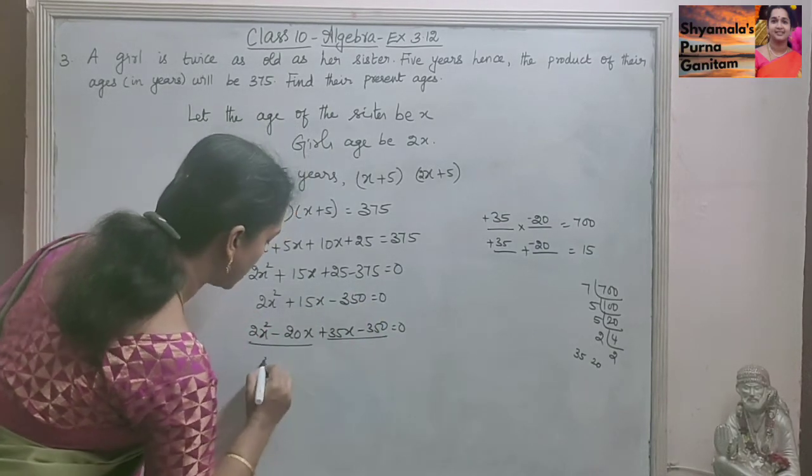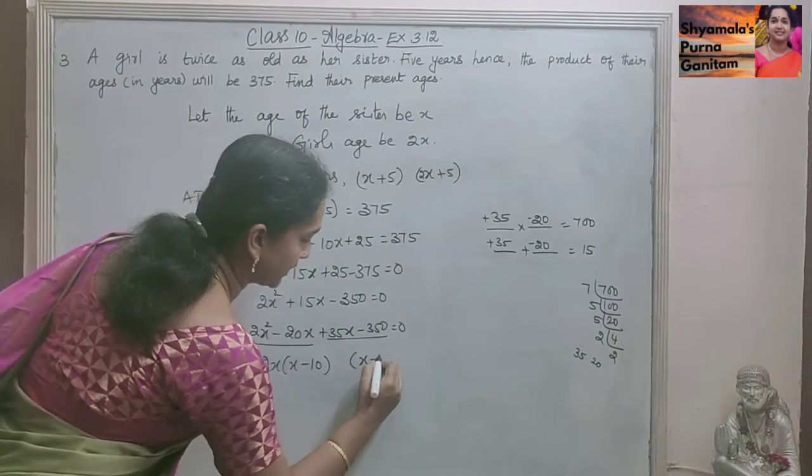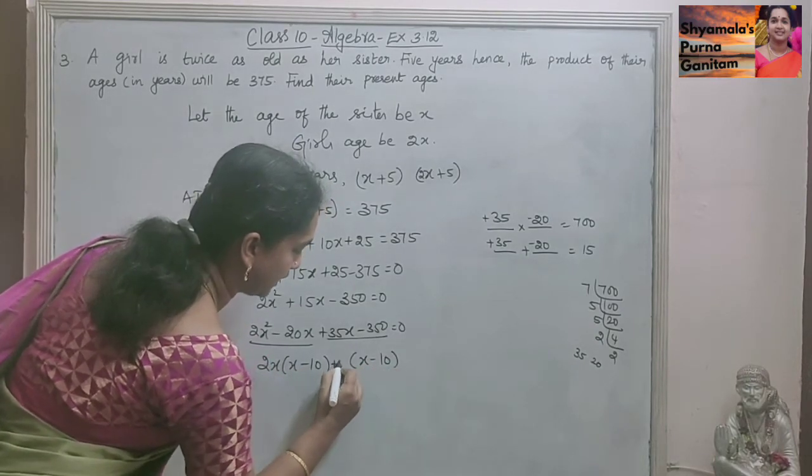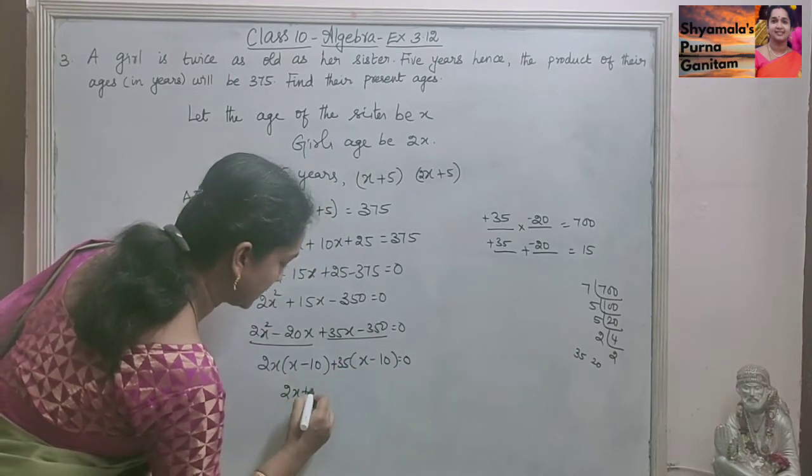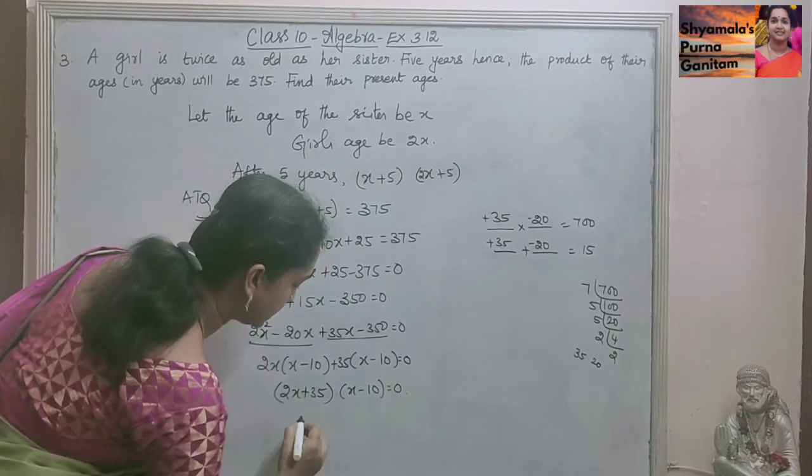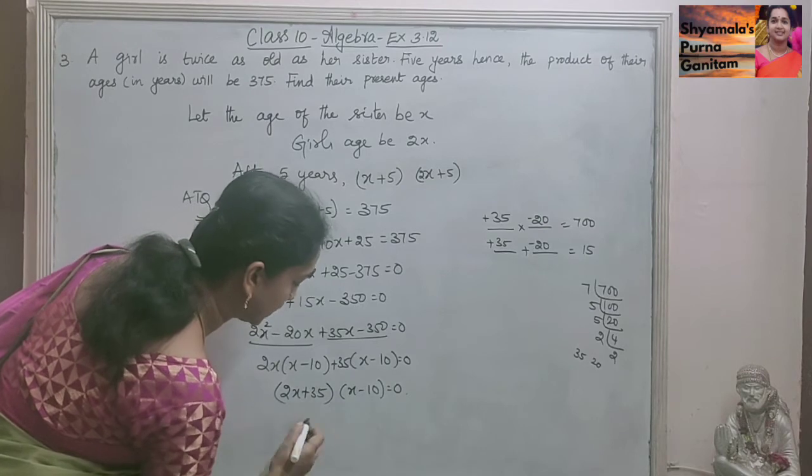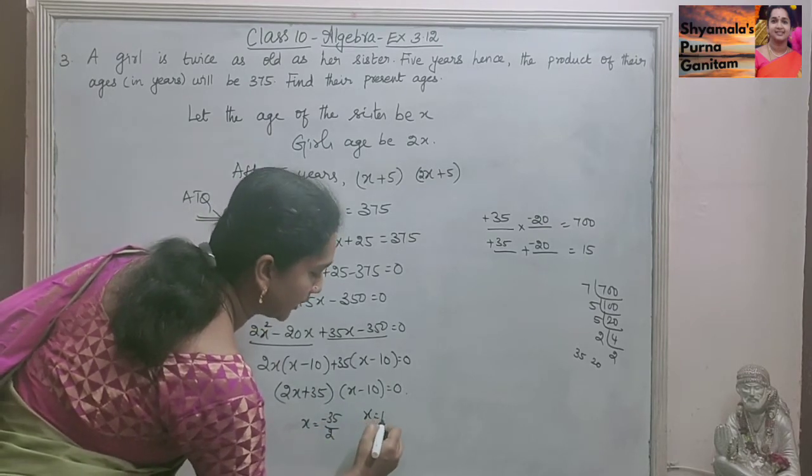So first 2 and next 2. So 2X times (X minus 10). So here if it is X minus 10, it has to be 35 outside. So (2X plus 35) and (X minus 10) are the factors. That is X is equal to minus 35 by 2 and X is equal to 10.